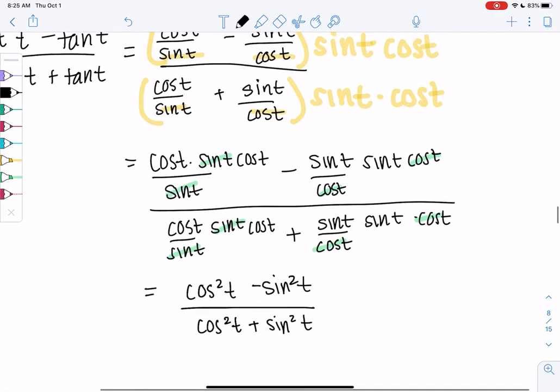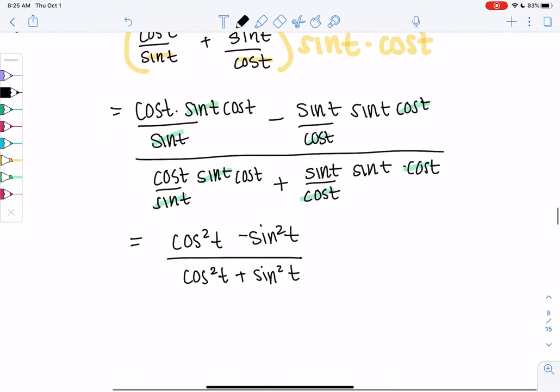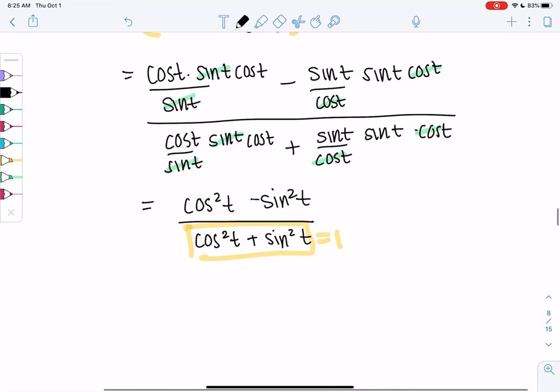Somehow we want to eventually get this to look like one minus two sine squared. We're almost there. I noticed the bottom is equal to one, so that's good. We get cosine squared minus sine squared all over one, so that disappears.